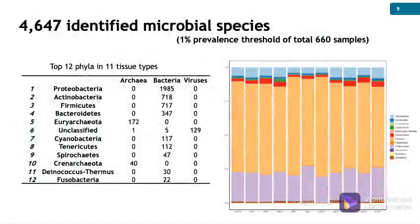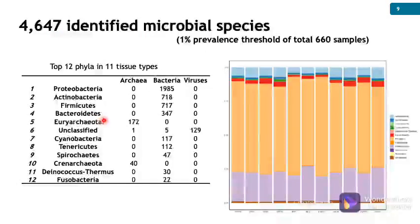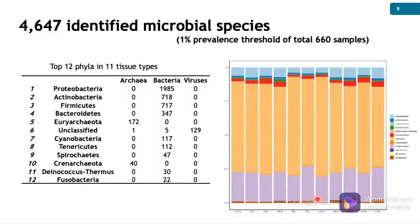Next, we used 1% microbial prevalence as the threshold for species present in rat organs, which helped identify 4,647 species for downstream analyses. The table lists the top 12 phyla ranked by population sizes. The bar plot shows the relative abundances of the top 12 phyla in 11 rat tissue types. Firmicutes and Proteobacteria are the two most abundant and diverse phyla across all samples.